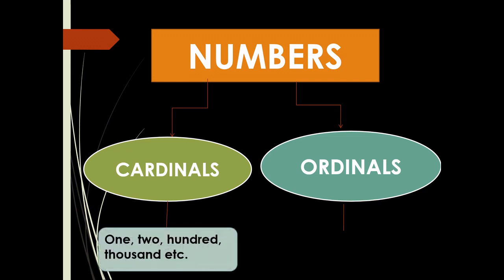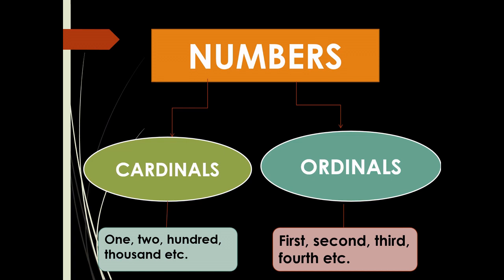Examples: 1, 2, 100, 1000, etc. are cardinal numbers. 1st, 2nd, 3rd, 4th are ordinal numbers.